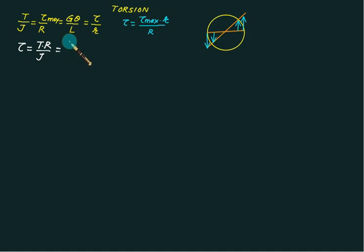This can be written as T divided by J/R, and J/R is called the section polar modulus. So we have T divided by Zp. If you simplify this term for solid shaft, you will get 16T divided by π d³.